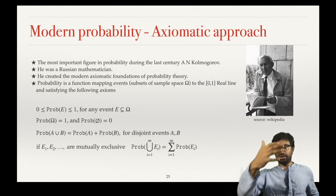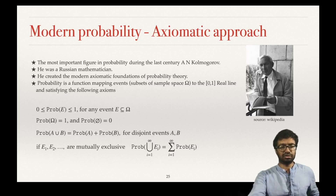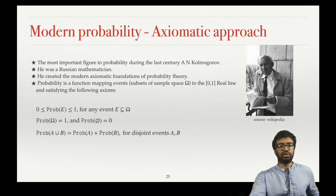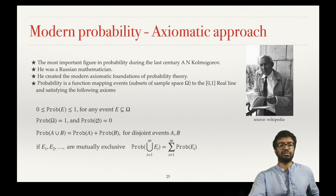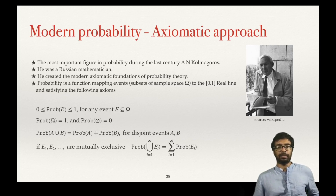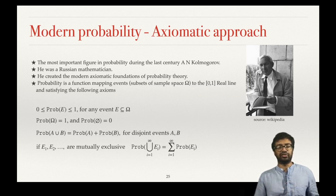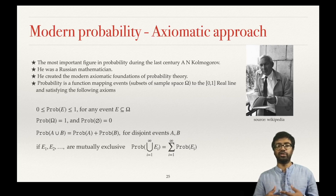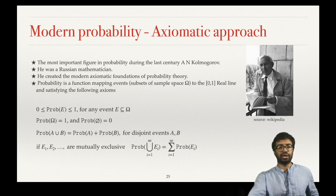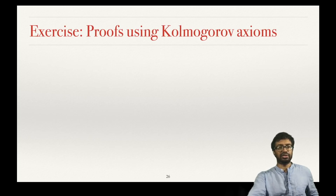For continuous probability, you need one more axiom: for a countable set of mutually exclusive events, the probability of their union equals the sum of their individual probabilities. These axioms are the axiomatic approach of Kolmogorov. Using these axioms, you can try to solve these exercises.